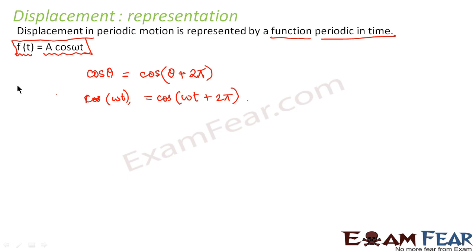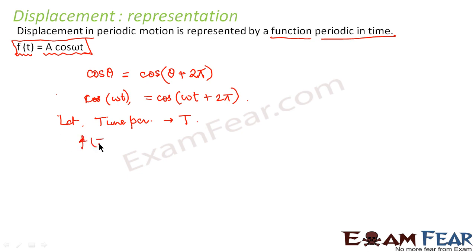This is how we represent displacement of a particle. Now let us find the time period — that is, after how much time the same pattern of motion will repeat. Let the time period be capital T. That means the displacement function will repeat itself after T, so f(t) = f(t + T), because the same pattern starts repeating.